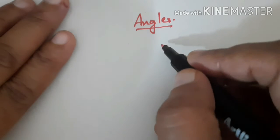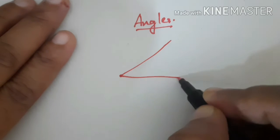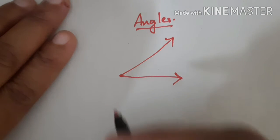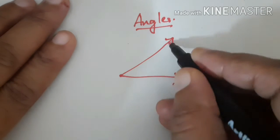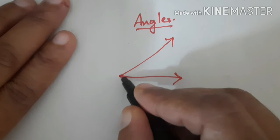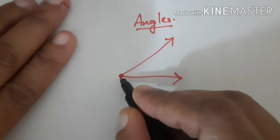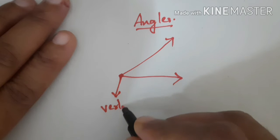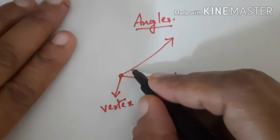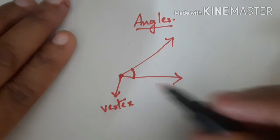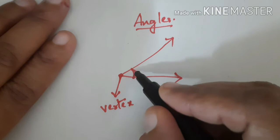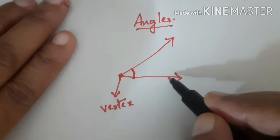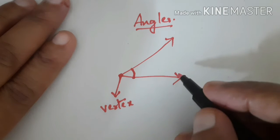Next we are going to study about angles. We have studied angles in the previous year. Now see here, there are two rays joining at a point. This point is called a corner, and this corner is known as a vertex. Whenever a corner or a vertex appears, there will be an angle. The vertex is the joining point of two rays or two lines.